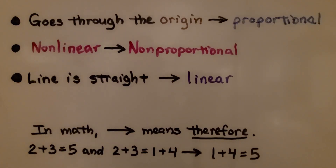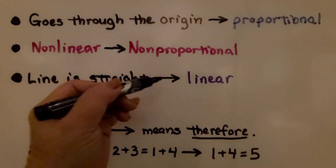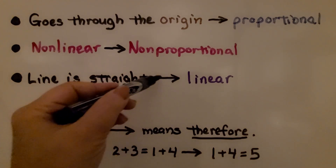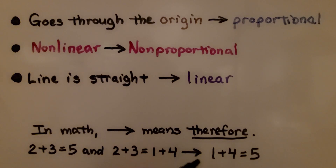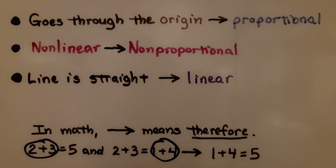To wrap up this lesson: if it goes through the origin and it's straight, it's proportional. If it's non-linear, it's non-proportional. And if the line is straight, it's linear. The little arrows pointing to the right mean 'therefore.' In math, that arrow means therefore — for example, if 2 plus 3 equals 5 and 2 plus 3 equals 1 plus 4, therefore 1 plus 4 is equal to 5.